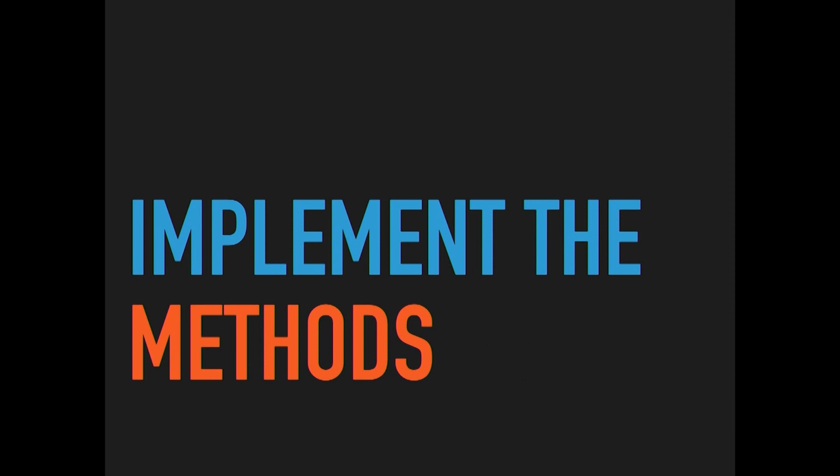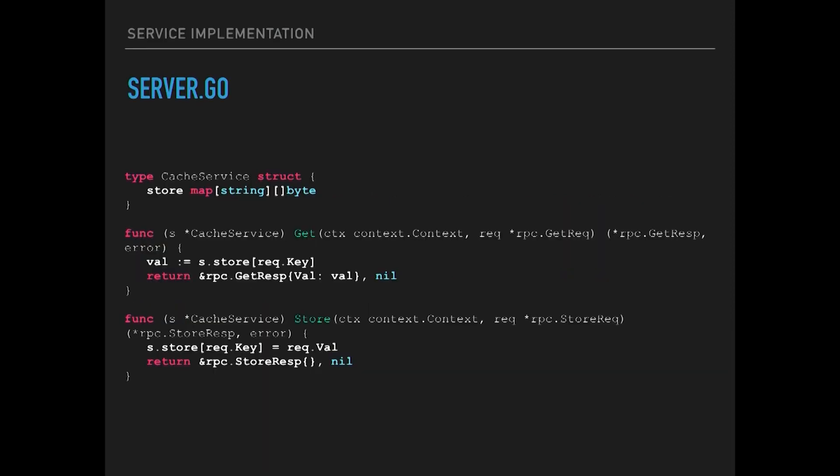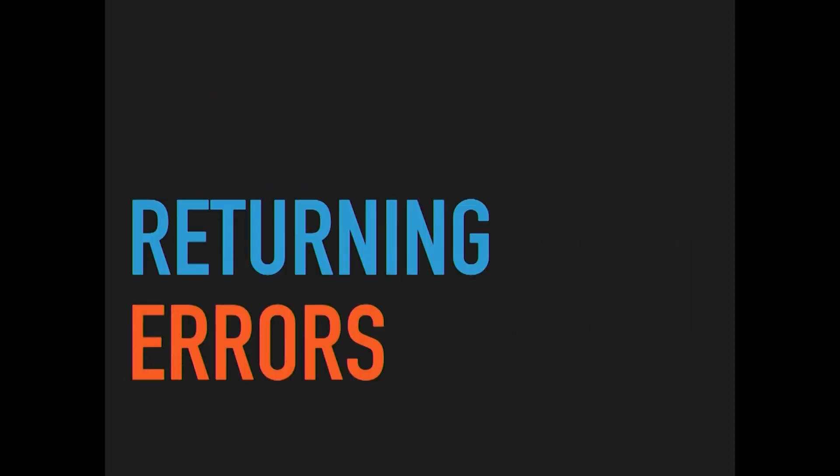Let's go back to our code and implement the methods. We're just going to create a map, and when we have the implementation of our get method, we look in that map and return a GetResp with the value pulled out. For the store request, we take the key and value on the request object and put them into the map. There's no locking shown here — just imagine it there, because these things will be called concurrently.